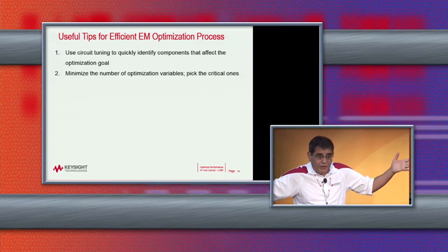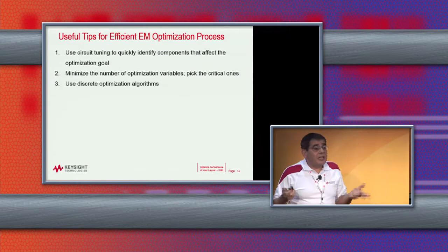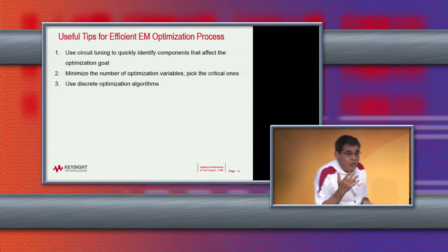Once you have identified the impactful components, minimize the number of optimization variables. EM optimization is expensive in time, so use step one to reduce the variable count. Also use discrete optimization — not a gradient method. If you have a capacitor to optimize, don't go from 3 pF to 3.01 to 3.02 pF because every step takes a long time for EM to run. Instead, do discrete optimization: set the capacitor range from 3 to 4 pF with steps of 0.2 pF, giving you only 5 total steps.